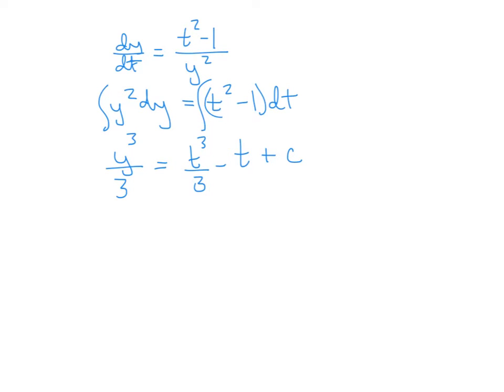Now I'm going to solve for y. I'm going to multiply by 3. y cubed equals t cubed minus 3t plus, well, 3 times C is just another constant. Then I'm going to take the cubed root of this whole thing. As a reminder, I cannot distribute that cubed root. So that C is underneath that cubed root. So there is the solution to this differential equation. It's not an IVP, so this is the general solution.